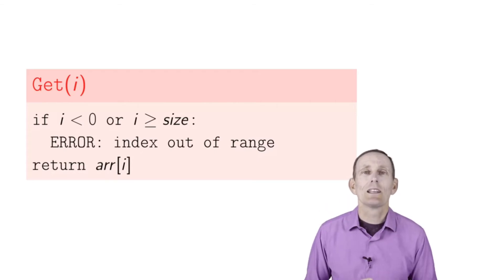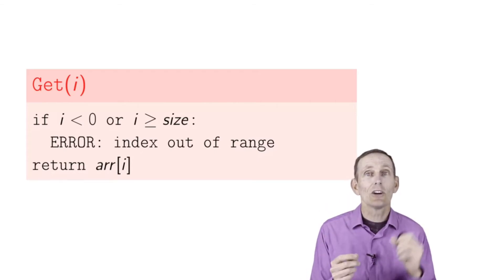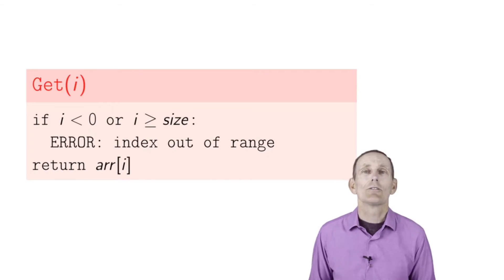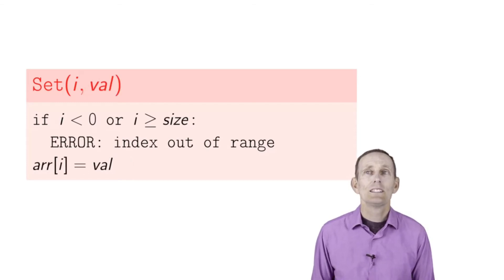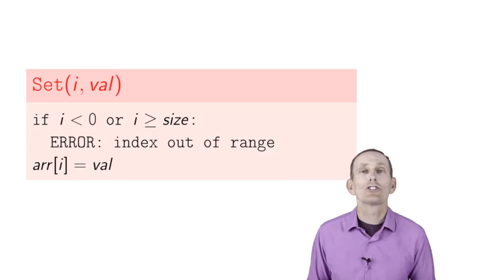If it's less than zero or greater than or equal to size, it's out of range - that'll be an error. If we're in range, we just return index i from the dynamically allocated array. Set is very similar - check to make sure our index is in bounds, and then if it is, update index i of the array.